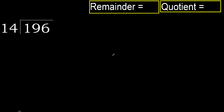196 divided by 14. 1 is less, therefore next — 19 is not less. With 19, 14 multiplied by which number is nearest to 19 but not greater? 14 multiplied by 2 is 28, which is greater. Multiplied by 1, 14 is not greater.